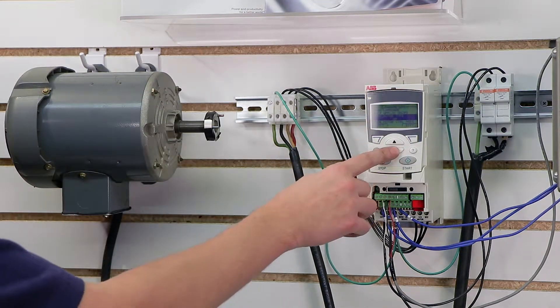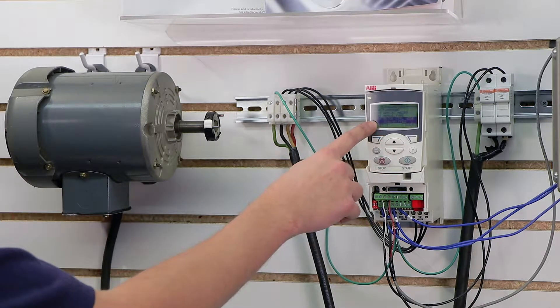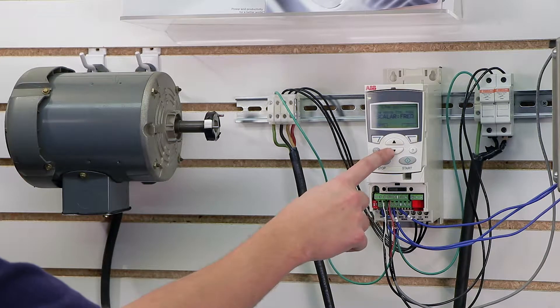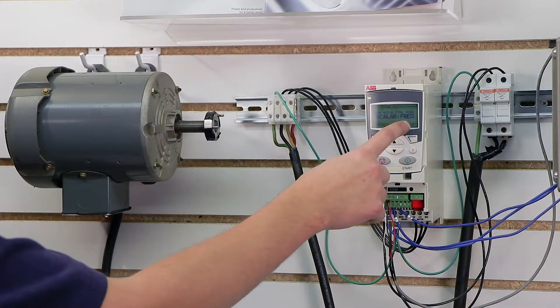Then I'm going to go down to 9904, and this is where we're going to select our tuning type. I'm going to click edit, and we have scalar frequency, which basically means we're going to do standard volts per hertz without tuning. But I'm going to go down to vector.